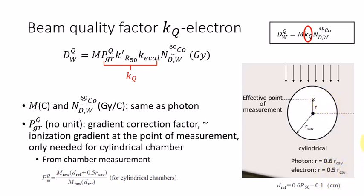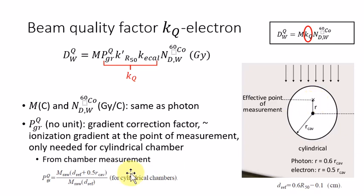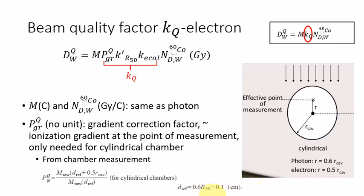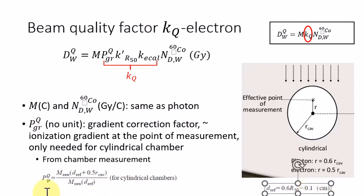For photon beam, this effective point of measurement is 0.6 multiplied by the radius of the cylindrical chamber. For electron beam, it's 0.5 multiplied by the radius of the cylindrical chamber. The P gradient from our TG51 chamber measurement equals the reading measured at the upper effective point of measurement divided by the reading at the reference depth. This reference depth is closely related to the R50 value of an electron beam, which is from the PDD scan.